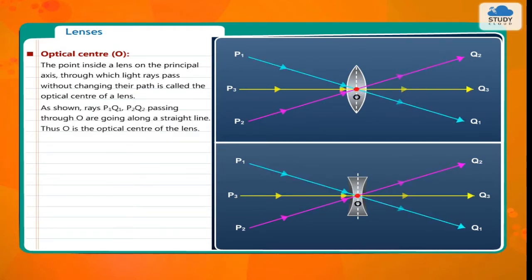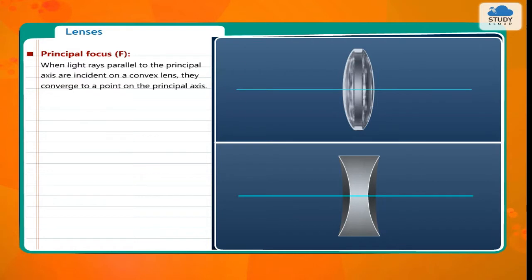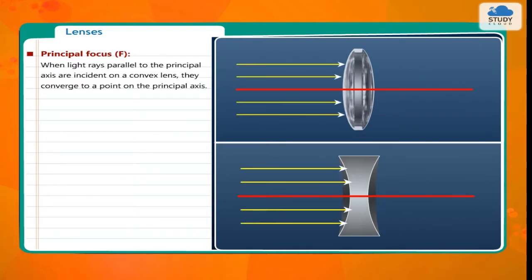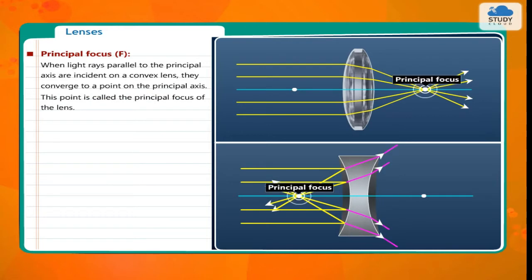As shown, rays P1Q1 and P2Q2 passing through O are going along a straight line. Thus O is the optical center of the lens. When light rays parallel to the principal axis are incident on a convex lens, they converge to a point on the principal axis. This point is called the principal focus of the lens.